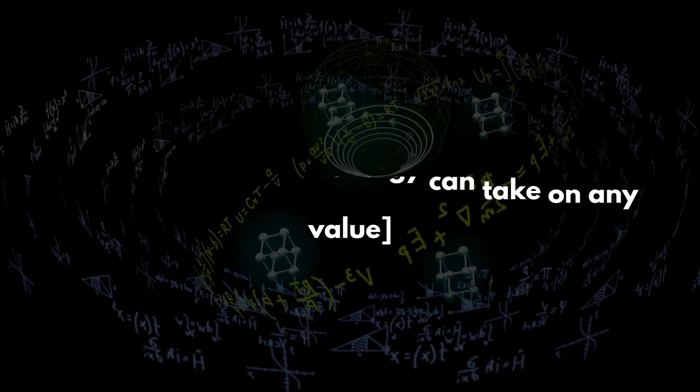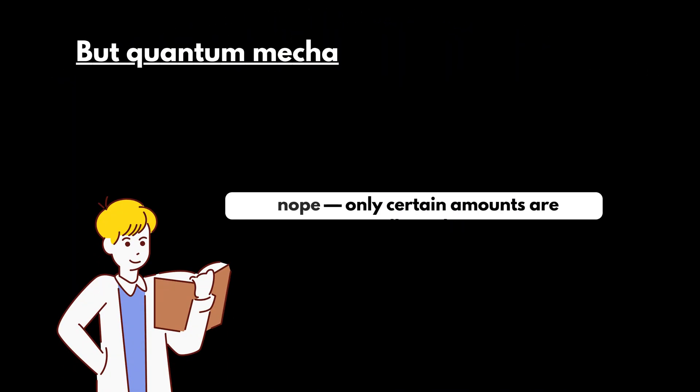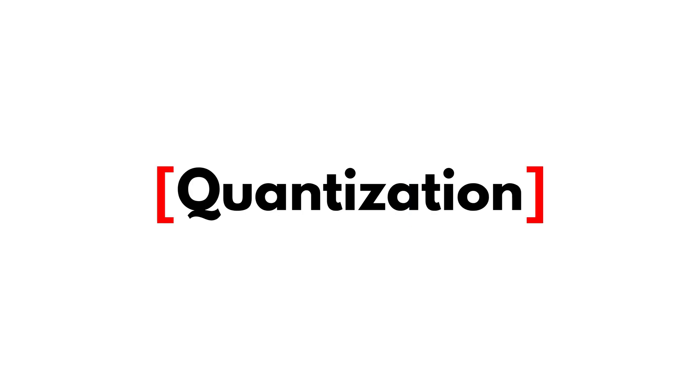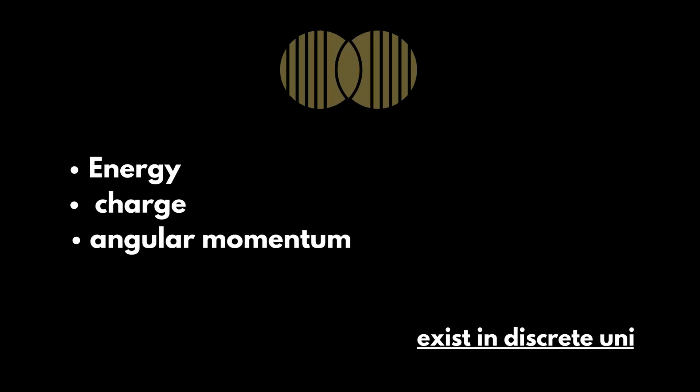In classical physics, energy can take on any value. But quantum mechanics says nope. Only certain amounts are allowed. This is quantization. Energy, charge, and angular momentum exist in discrete units. No in-betweens.